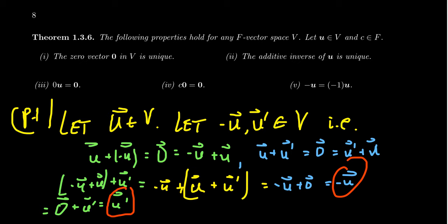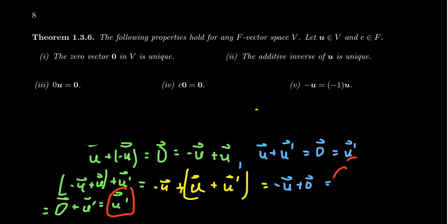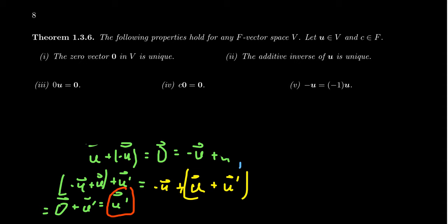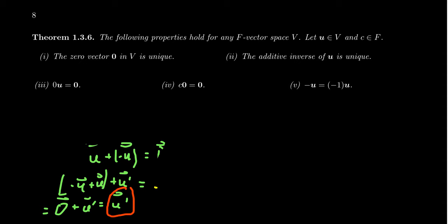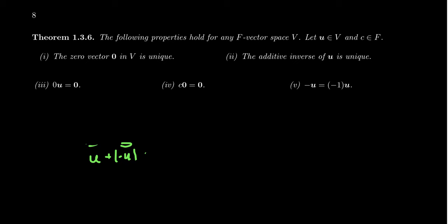If a vector walks like an inverse and quacks like an inverse, it must be the inverse. There's only one inverse vector possible for any given vector, following from the axioms of the vector space. This holds for every vector space — even Plutonian vector spaces would have unique inverses per vector.